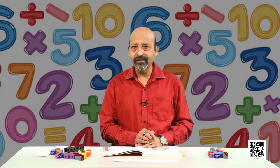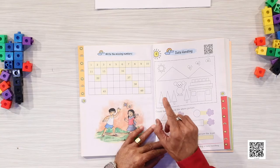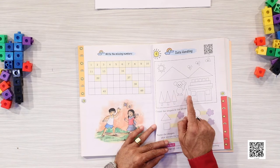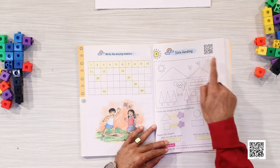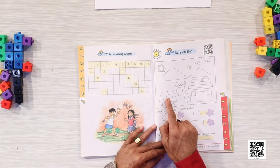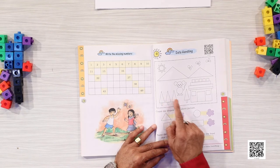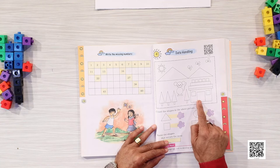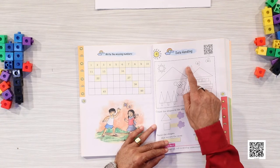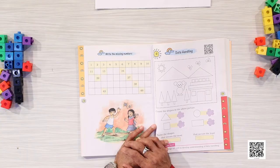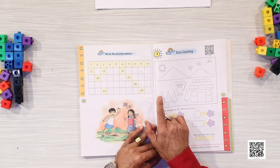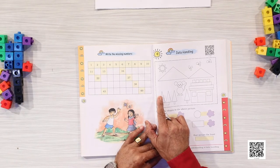If you have this book with you, you have to color the shapes so that all shapes like this have the same color. Similarly, shapes like this have another color, and round shapes have another color. Let us start with the shape we call a triangle.